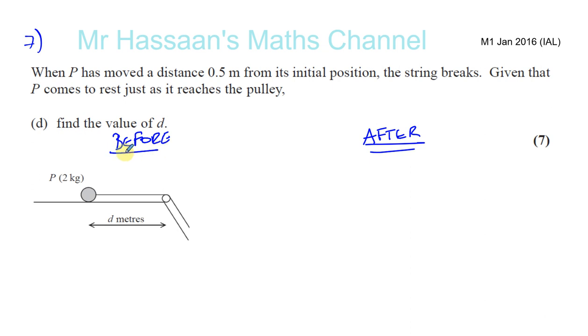Now before the string breaks, you've got your tension and you've got your friction, which was a half G. And we knew the acceleration was 3.5 meters per second squared. Now, after the string breaks, you've got no tension, but you've got your half G acting in the opposite direction to the motion. So let's say this is the pulley.